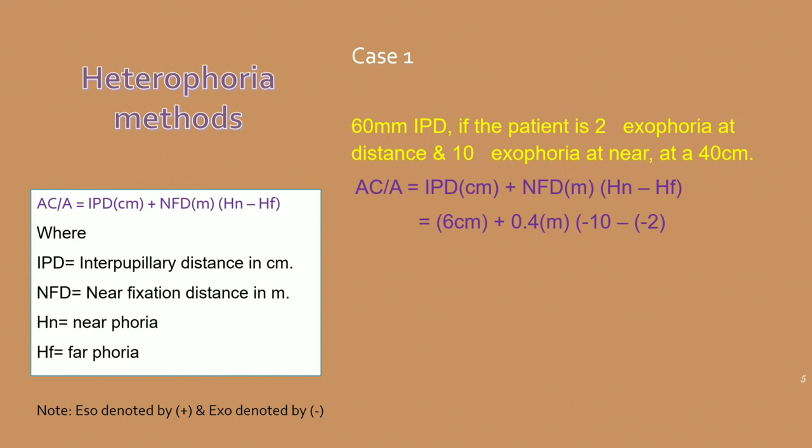This is a very important condition: when a patient has high AC/A ratio with esophoria at near, they generally respond well to plus lenses. If the same degree of esophoria were associated with normal or low AC/A ratio, the treatment approach would include prism correction or vision therapy or both.